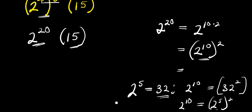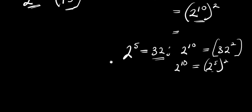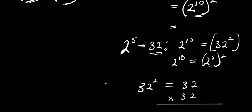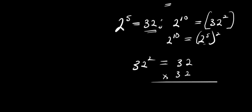So, 32 to the power of 2 is what? That's what we are looking for. We have 32 to the power of 2, which is 32 times 32. So from here: 2 times 2 is 4, 2 times 3 is 6, 3 times 2 is 6, 3 times 3 is 9.